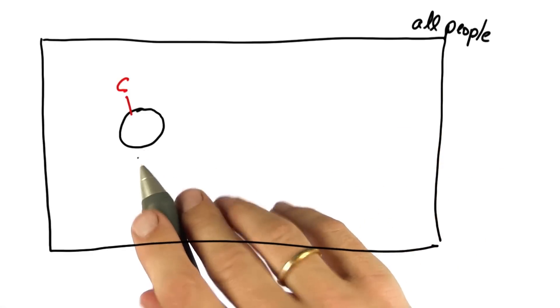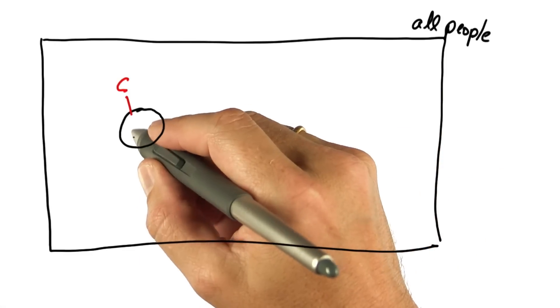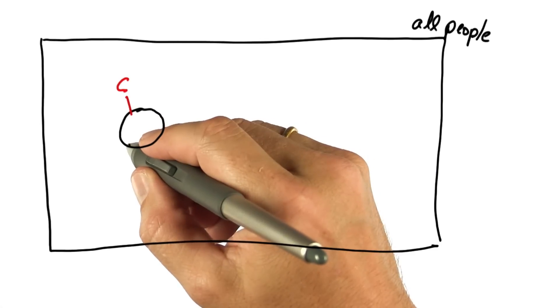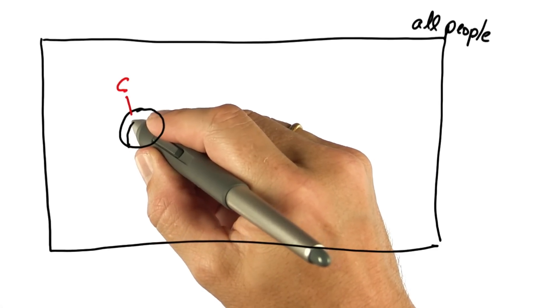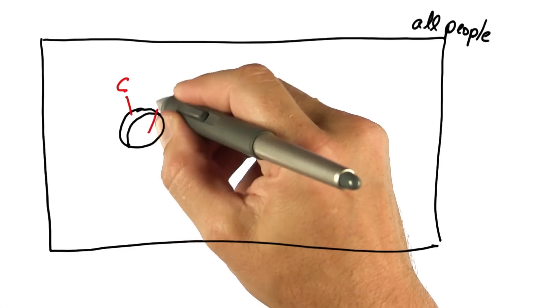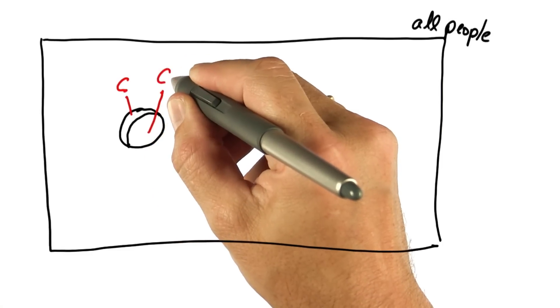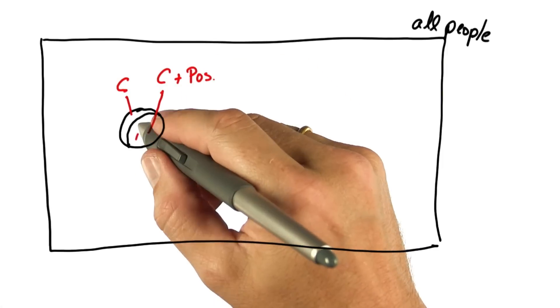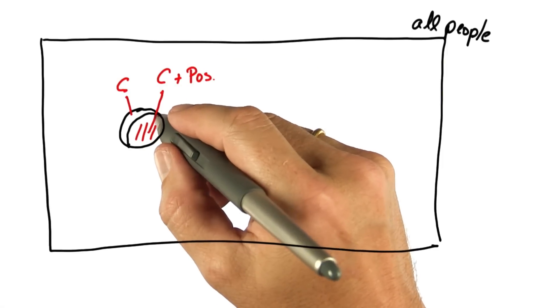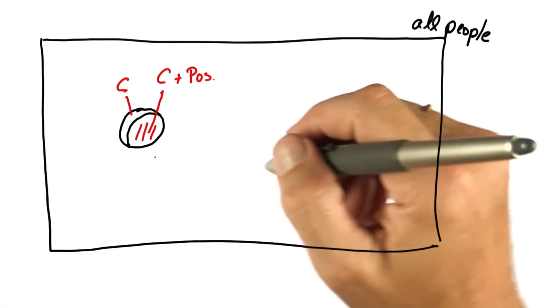We know there's a test that if you have cancer, correctly diagnoses it with 90% chance. So if you draw the area where the test is positive, cancer and test positive, then this area over here is 90% of the cancer circle.